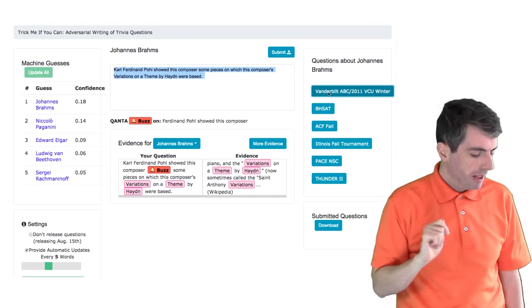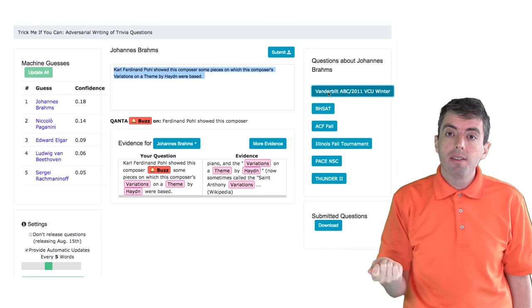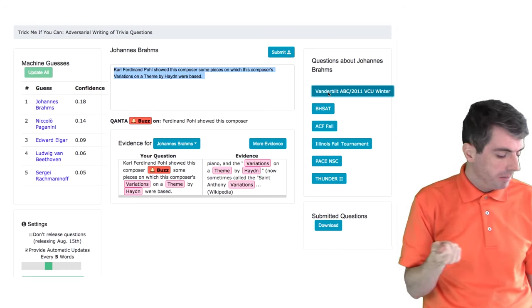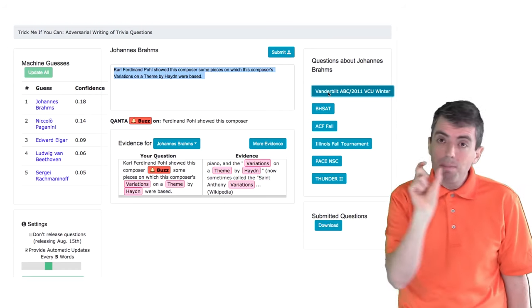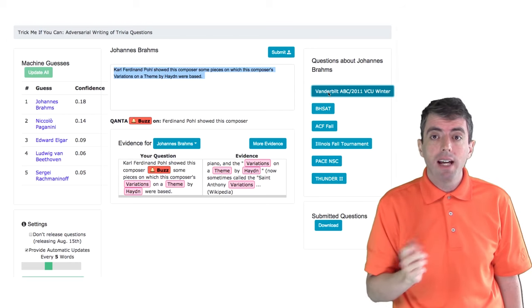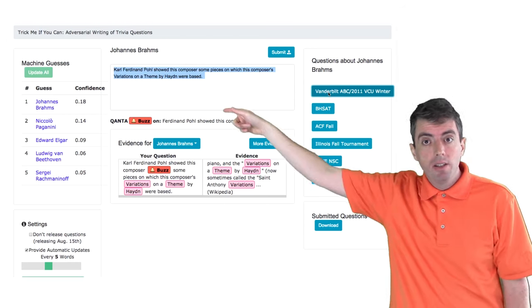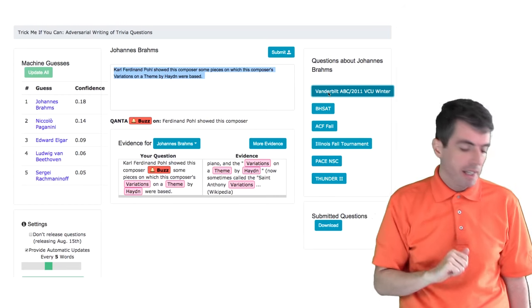In addition to seeing the guesses on the far left-hand side of the screen, where Johannes Brahms is on top, we can also see what other questions have been written about Johannes Brahms. Down below, you can see which specific words are triggering the system to answer your question with Johannes Brahms or whatever the top guess is.